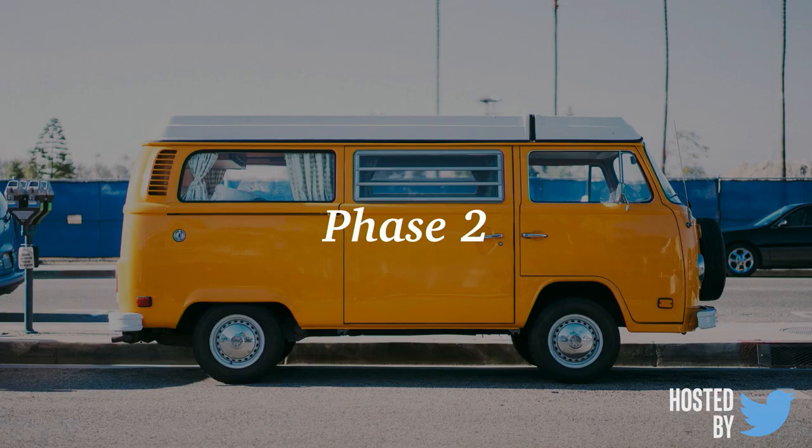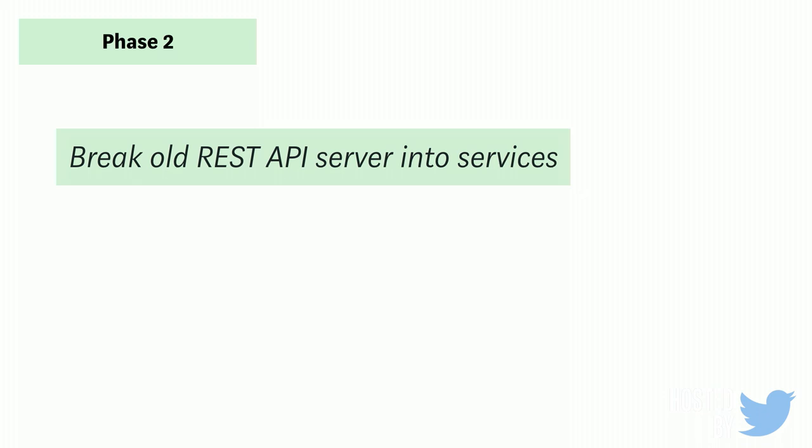Now on to phase two, which is performance. We want to break our old REST API server into services — basically start chipping away at it and turning pieces into services. Not necessarily microservices, but services that make sense. Some parts were less performant and we can break them off and dedicate resources to them. This also means we can start retiring our legacy systems. Once we start breaking apart all these old pieces, we can finally get rid of the pieces that were making things slow.